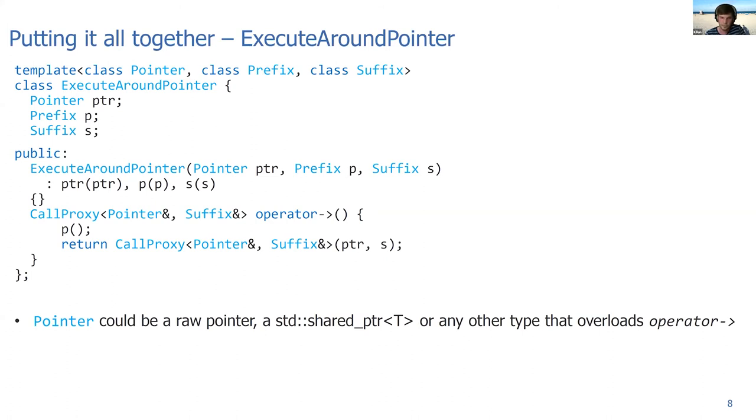Then we overload the operator arrow. The first thing we do is call the prefix action. The next thing that we do is return a CallProxy object, a temporary object which is also templated. In this case we use pointer ref and suffix ref, just to avoid possibly copying expensive suffix actions or maybe to avoid copying the pointer type, for example if it would be a shared_ptr. So you don't have to use a raw pointer as template argument. It could be also a shared_ptr, or actually any type that overloads operator arrow and participates in this recursive chaining of the operator arrow.